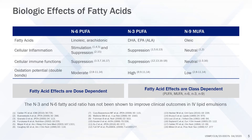On this slide, I have listed the three major classes of unsaturated fatty acids across the top of the slide. The N6 PUFAs, or N6 polyunsaturated fatty acids. The N3 PUFAs, or N3 polyunsaturated fatty acids. And the N9 MUFAs, or N9 monounsaturated fatty acids. Examples of N6 PUFAs are linoleic acid and arachidonic acid. Examples of N3 PUFAs are DHA and EPA. Examples of N9 MUFAs are oleic acid.